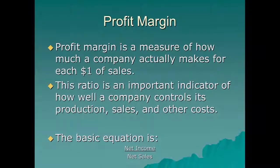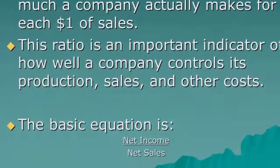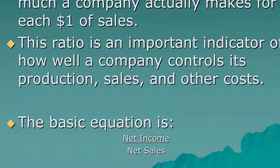Next is profit margin, a very popular profitability ratio. It measures how much money a company actually makes for every dollar of sales — how much of that dollar they actually keep. The bigger it is, the better, but competition typically keeps margins relatively small unless you're a monopoly or in a brand new industry. The equation is simply net income divided by net sales.